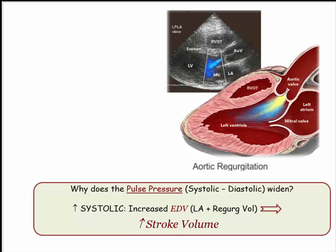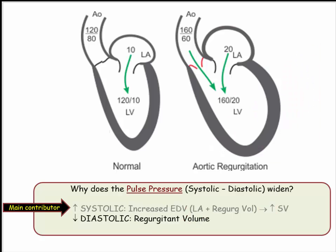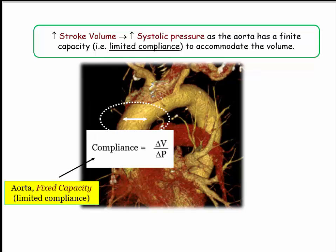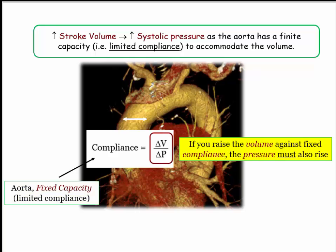We'll see in a moment how the increased stroke volume causes an elevation in the systolic blood pressure. Although the systolic contribution is primary, the diastolic pressure is also diminished as a result of valvular insufficiency. Why does the increase in stroke volume cause a rise in systolic blood pressure? The answer is the limited compliance of the aorta. Although rubbery and elastic, the aorta has a finite capacity to accommodate the increased volume of blood, and from the compliance formula, if compliance is at its limit, changes in blood volume must translate into changes in pressure.